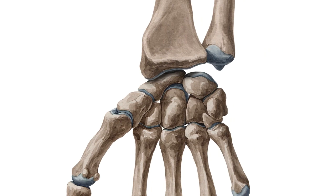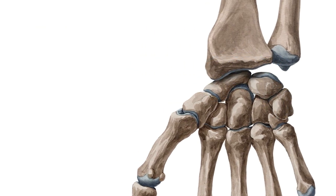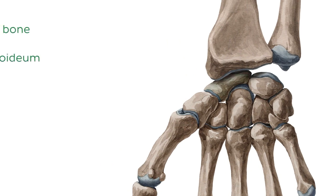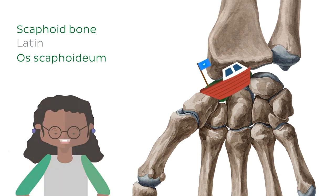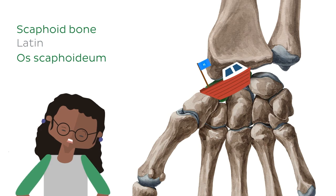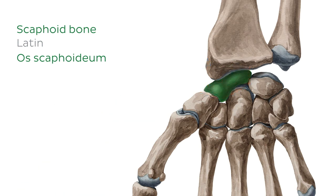Let's quickly run through the carpal bones of the proximal row, moving from lateral to medial. The most lateral bone of the proximal row is the scaphoid bone. It is named after the Latin word for boat, which makes sense because if you squint your eyes and tilt your head, it sort of looks like a small boat. The scaphoid bone has just one prominent landmark, the tubercle of the scaphoid bone, which is found on the palmar surface of the bone.